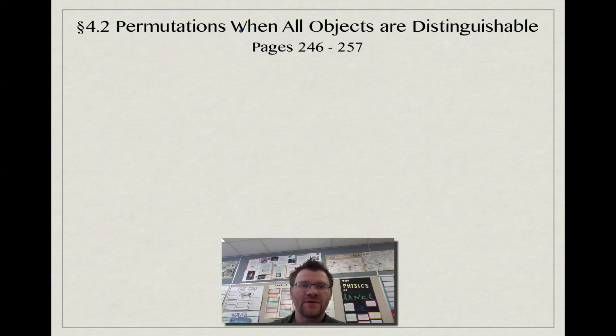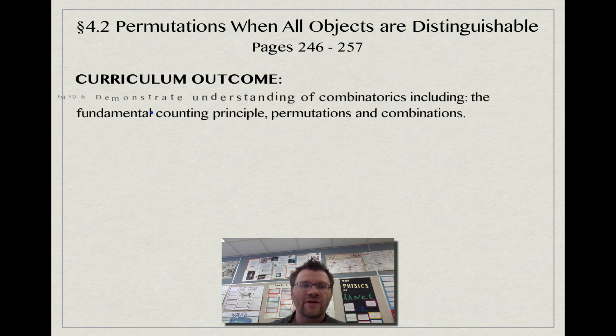We're looking at 4.2 today, which is permutations when all objects are distinguishable, on pages 246 to 257 in your text. Our curriculum outcome today is to demonstrate understanding of combinatorics, including the fundamental counting principle, permutations, and combinations.